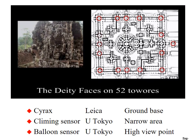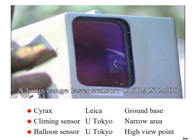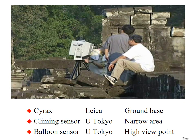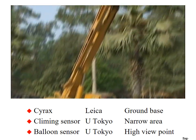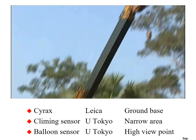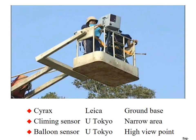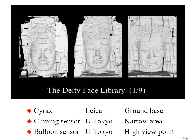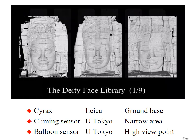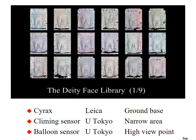To scan the deity faces of Bayon, we used a long-range laser sensor named Cyrax. We measured each face from many positions such as the ground, a scaffold on the roof, and a bucket lifted up by a crane. The data from different directions were integrated, and a 3D digital model of each face was built.